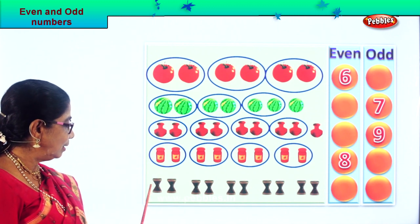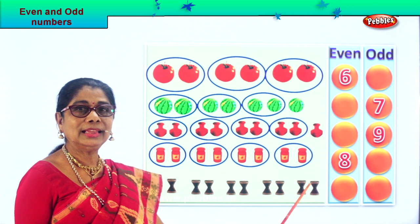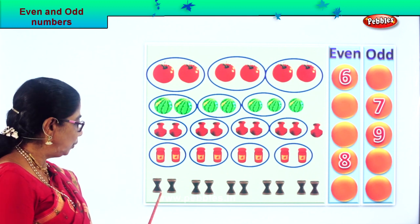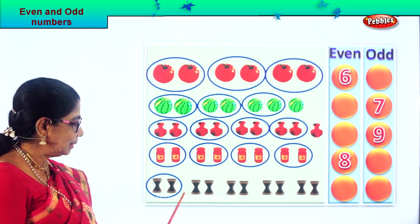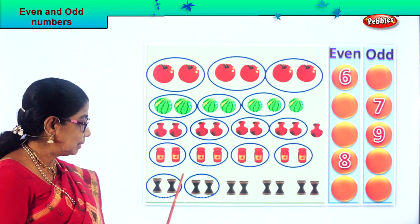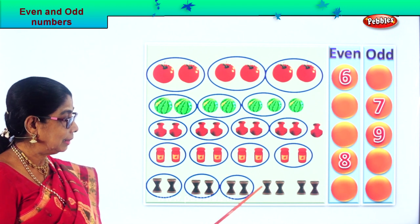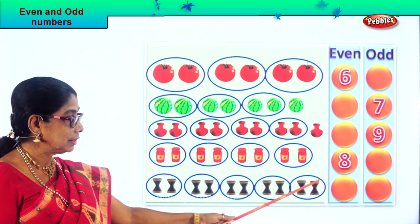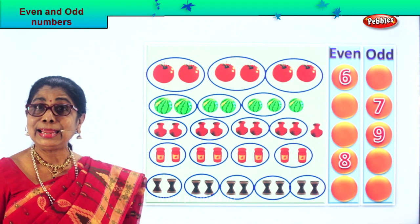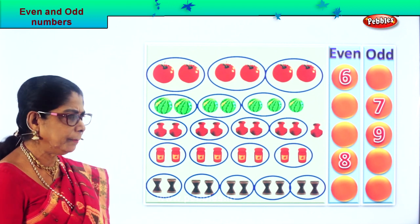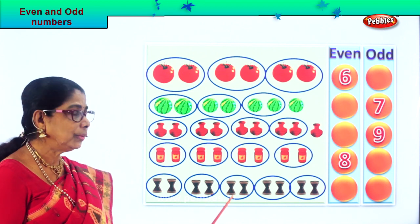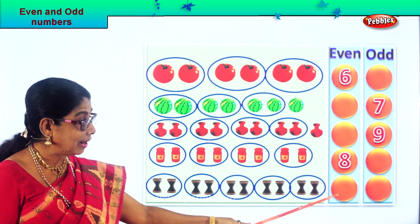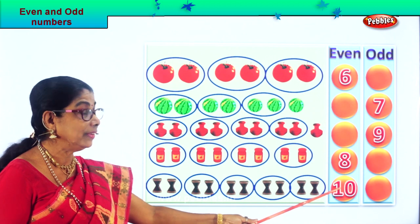Finally we have here something you can sit on. Count: one, two — circle; one, two — circle; one, two — circle; one, two — circle; one, two — circle; one, two — circle. All the stools are in pairs. Now count in twos: two, four, six, eight, ten. So we write ten down here because it is an even number.